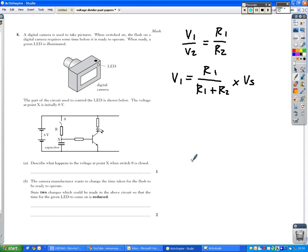So this question, a digital camera is used to take pictures. When switched on, the flash on a digital camera requires some time before it's ready to operate. When ready, a green LED is illuminated. So we've got some sort of time delay there, so what sort of input device are we using? A capacitor, exactly. You can see it in there, right here. That's what's creating your time delay.